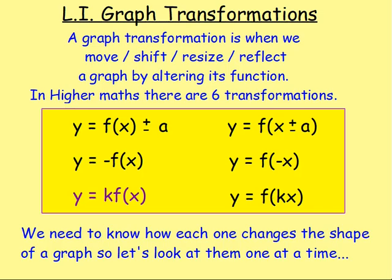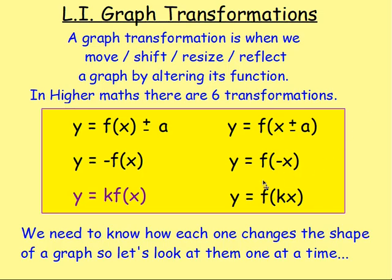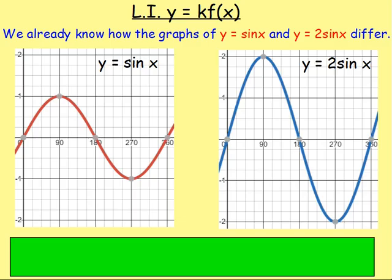Here we are with lesson number six in graph transformations, y equals kf of x. There are six transformations in total and this is the fifth that we are looking at. So y equals kf of x. So really what we're doing is we're putting some number in front of our function. How does that change the graph then?